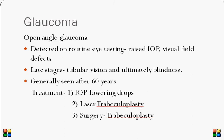Open angle glaucoma is generally detected on routine eye testing. Patients are not aware of it unless they reach end-stage glaucoma, when they notice their field of vision has decreased. This appears as tubular vision — as if looking through a tube — because the field of vision becomes progressively narrow, ultimately leading to blindness.